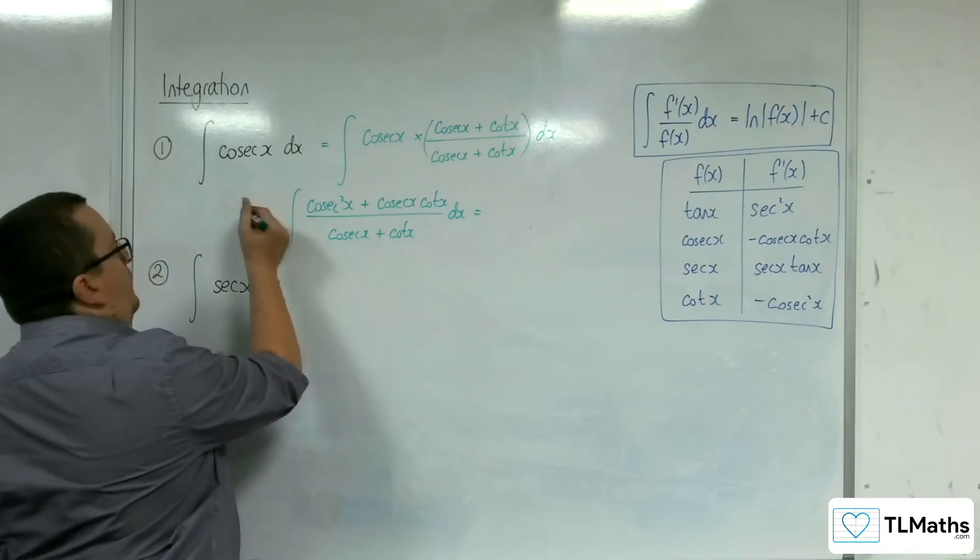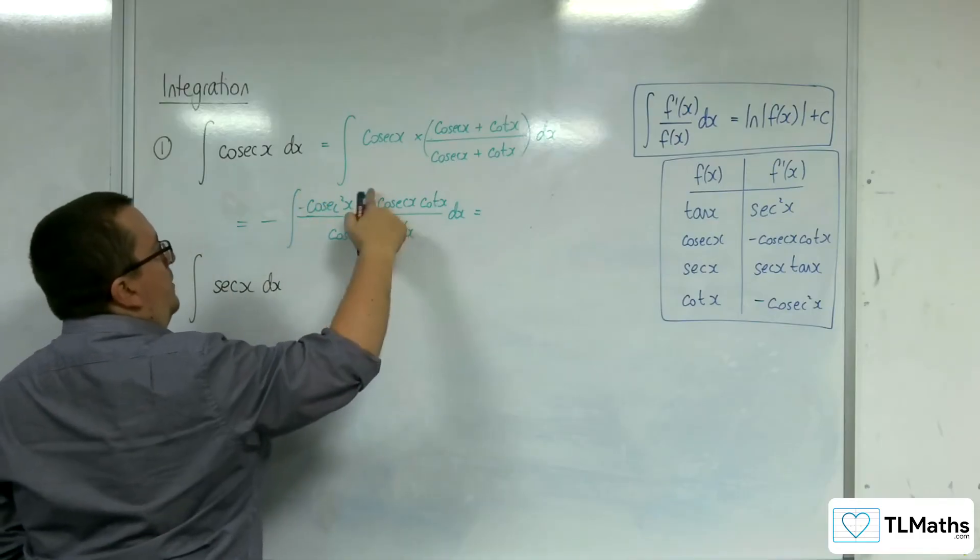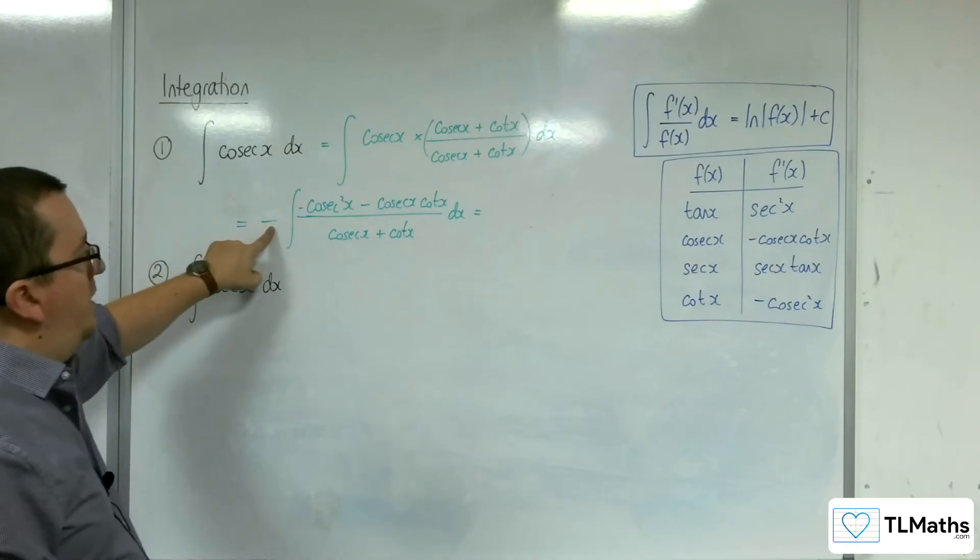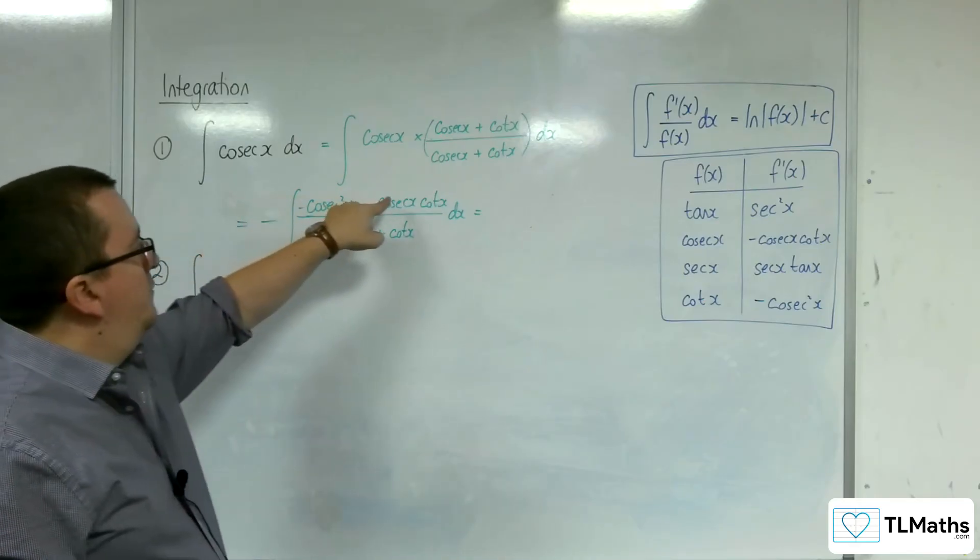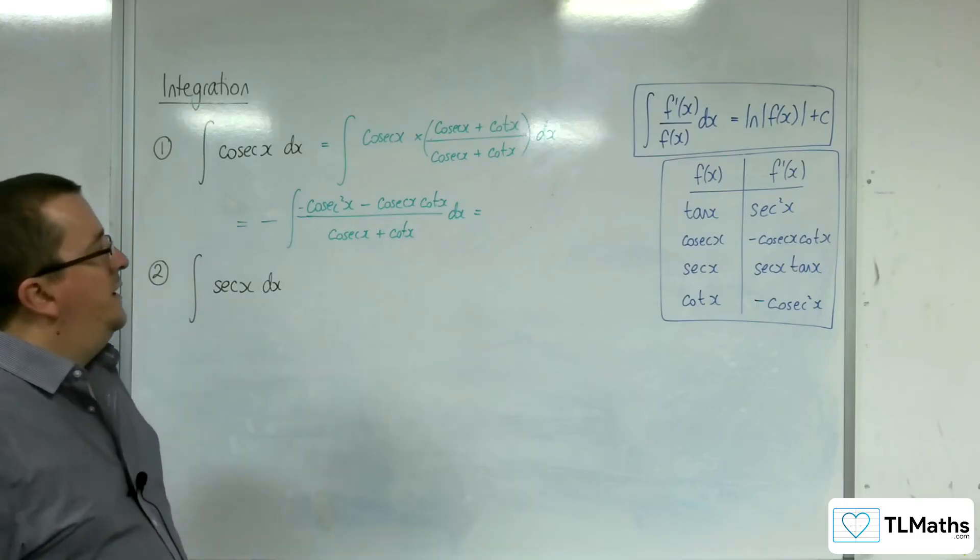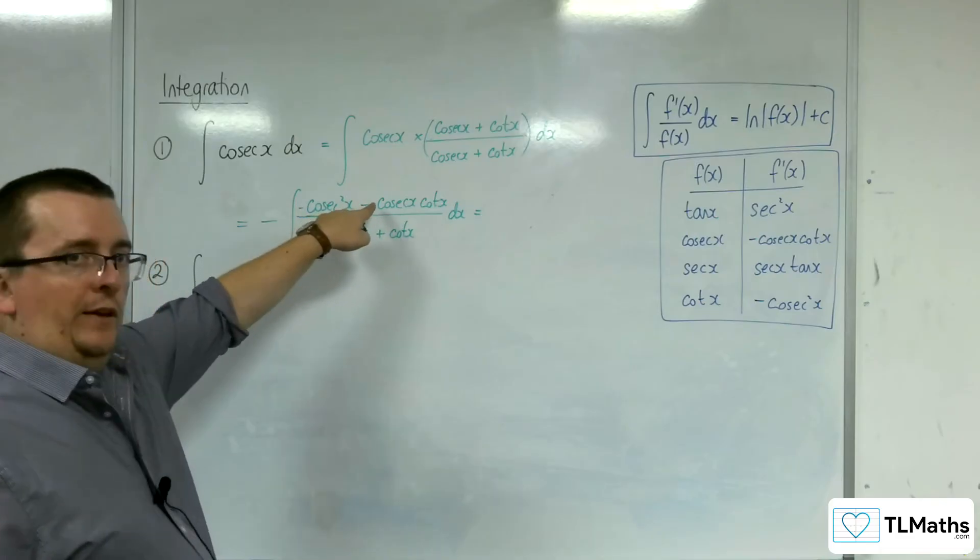So actually, if I was to write this as the negative of, I could multiply top and bottom by minus 1 like that. So I've got the minus on the outside, and now I've got the minuses in the numerator. So they cancel one another out. But the denominator now perfectly differentiates to the numerator.